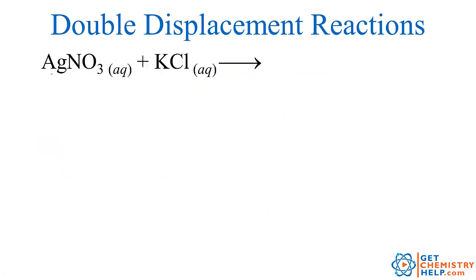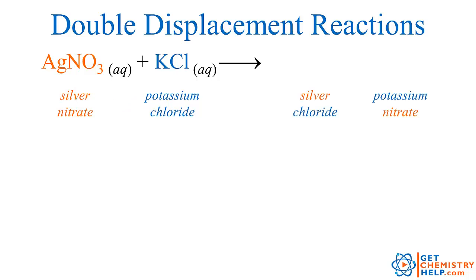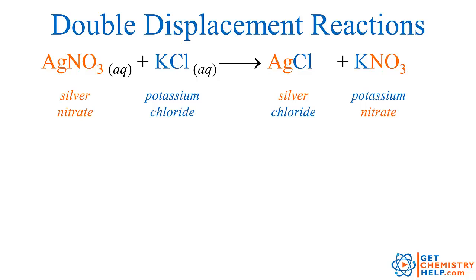Let me show you an example. Silver nitrate combines with potassium chloride — AgNO3 with KCl. Silver was with nitrate, potassium was with chloride. We just swap partners: silver goes with chloride, and potassium goes with nitrate. So we think of it as making silver chloride and potassium nitrate. Silver chloride is AgCl and potassium nitrate is KNO3. Our last step is to figure out the physical state — is it aqueous, solid, liquid, or gas? Silver chloride is a solid, and potassium nitrate is aqueous.